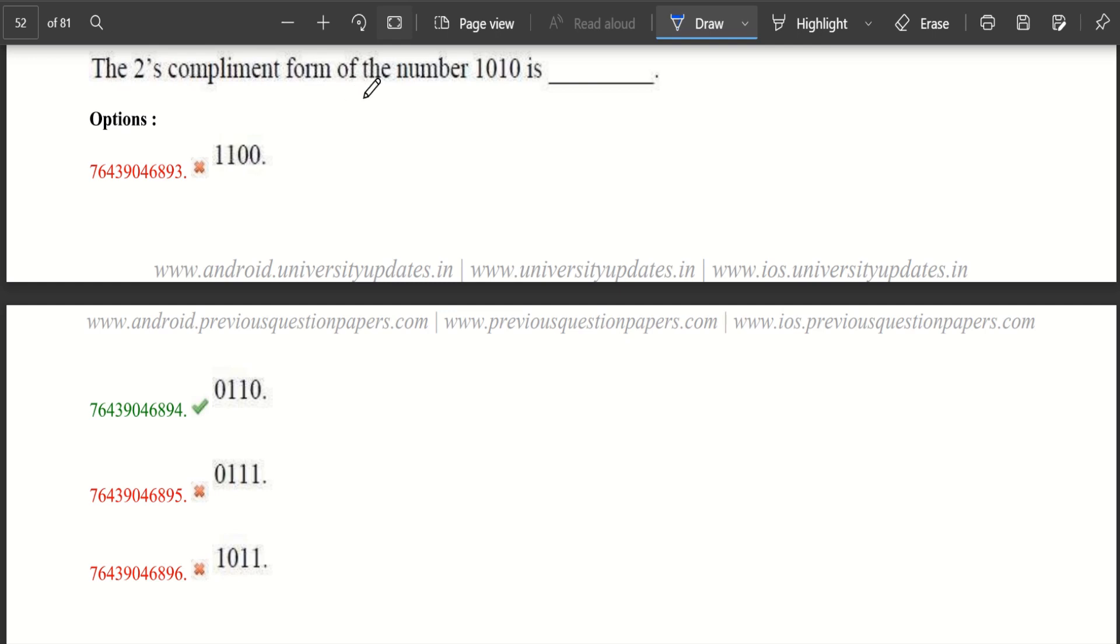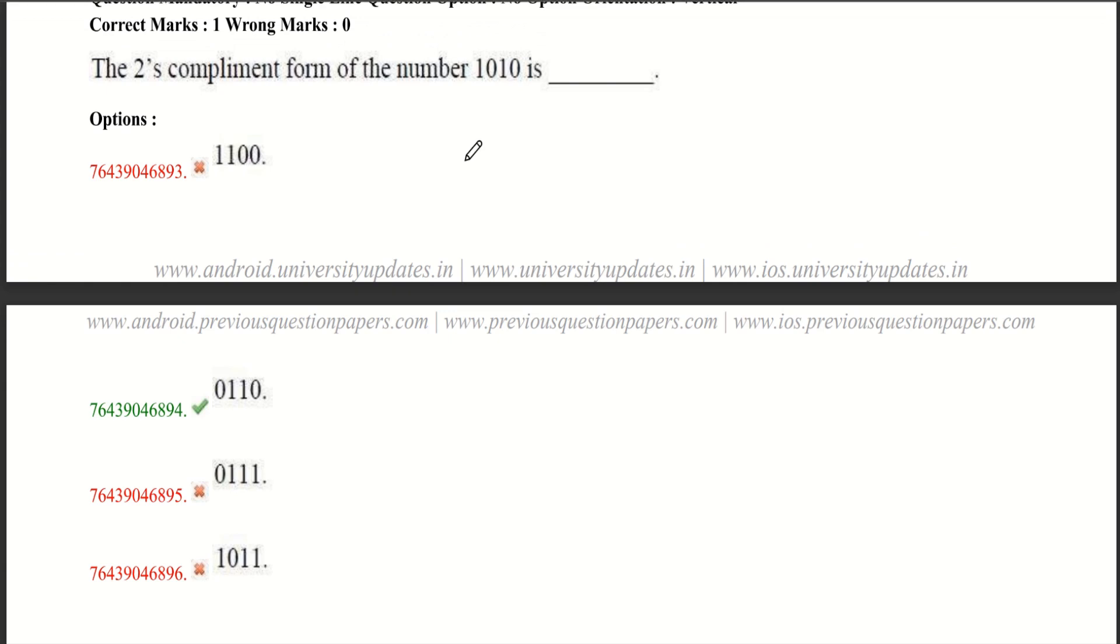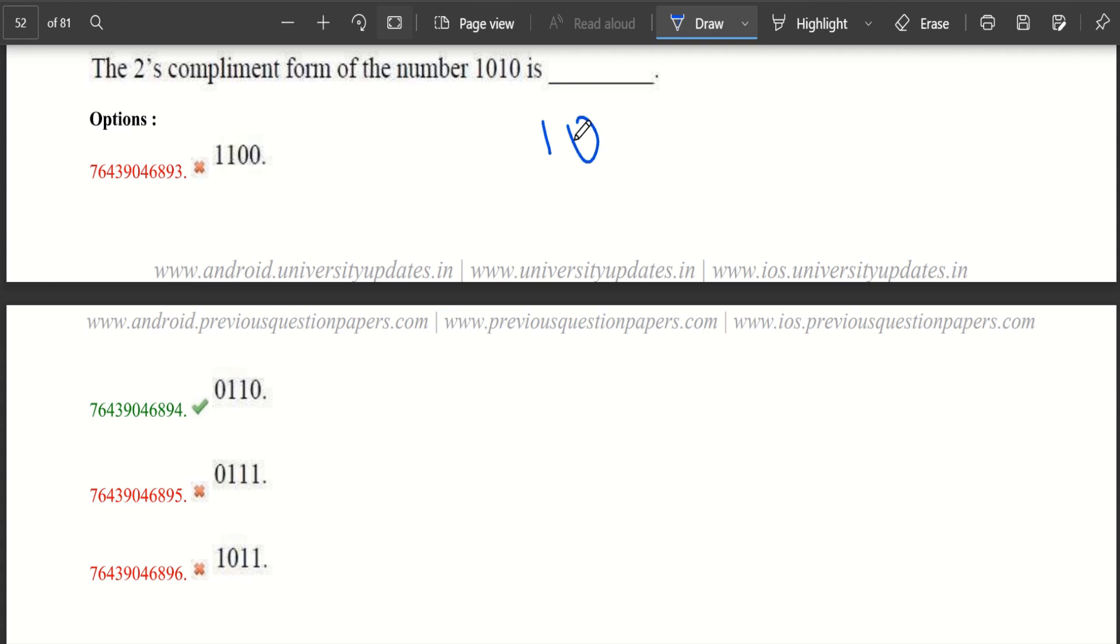OK now let's move to our next question. The question is the 2's complement form of the number 1010 is. 2's complement is very simple process, it consists of only two steps. First step, complement them, means convert zeros into ones and ones into zeros.